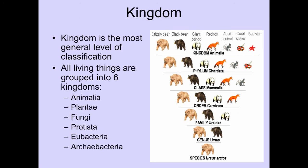A kingdom is the most general level of classification, and all living things are grouped into six kingdoms: Animalia — all the animals; Plantae — plants; Fungi — fungus; Protista, which many of you probably don't know; and Eubacteria and Archaeobacteria. Archaeobacteria should be self-explanatory because we talked about that with prokaryotic and eukaryotic cells.